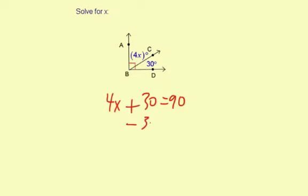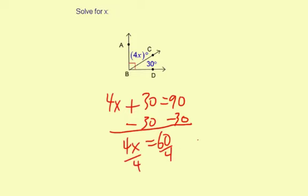Subtract 30 degrees from both sides to start solving. So we're going to get 4X equals 60, then divide by 4. X equals 60 divided by 4, which is 15. So X equals 15.